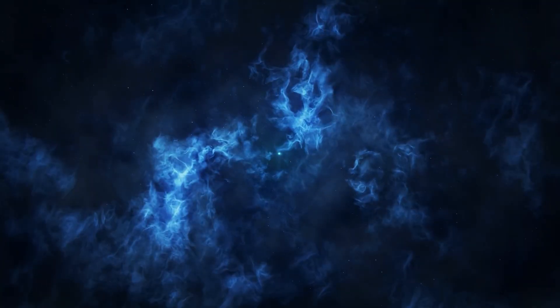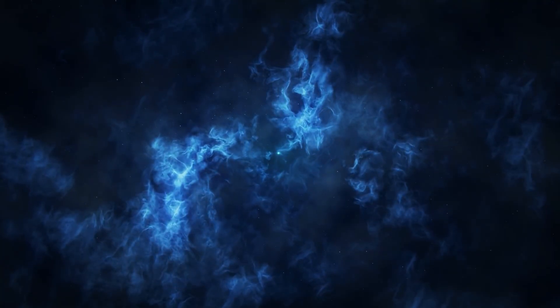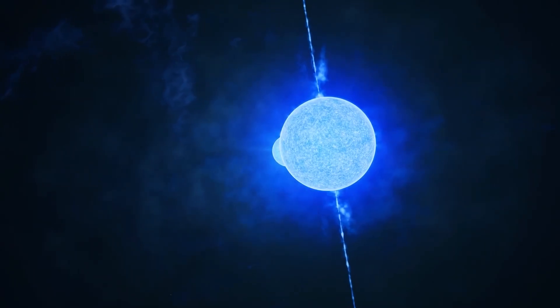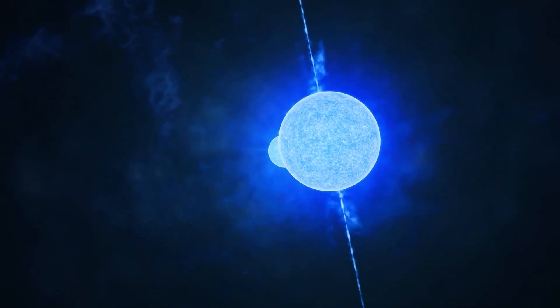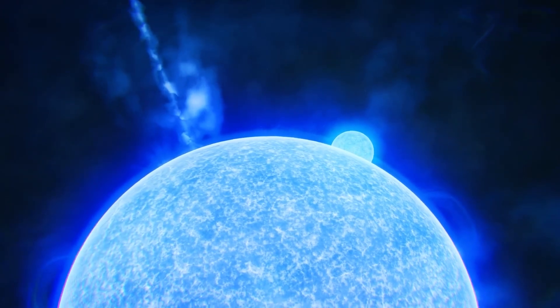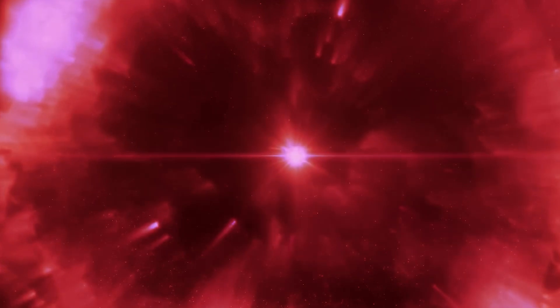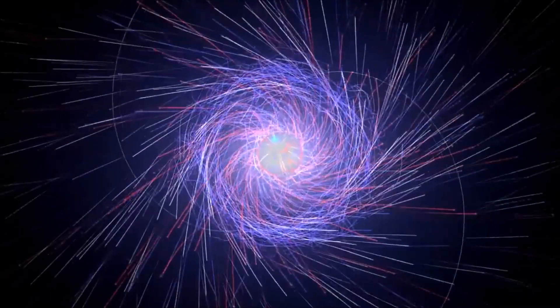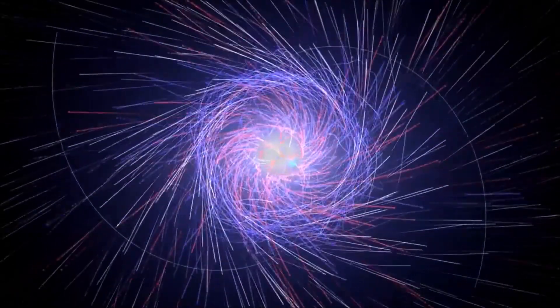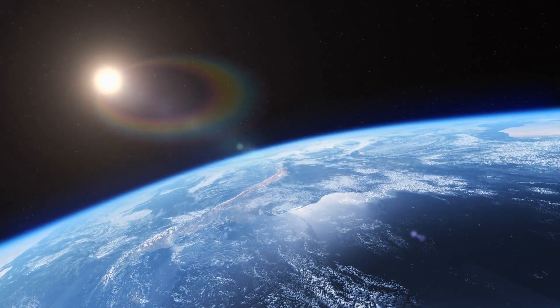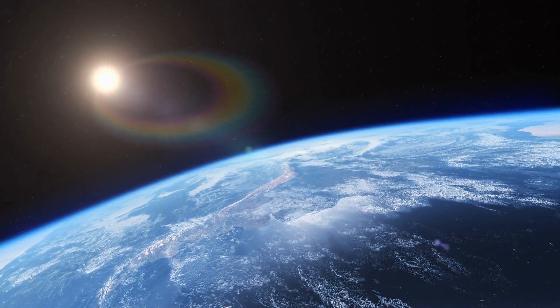If their sheer density wasn't mind-blowing enough, neutron stars come with a list of physical traits that sound more like science fiction than reality. For one, they spin at unbelievable speeds. Some whirl hundreds of times every second, faster than a kitchen blender, yet they're the size of a city and heavier than the sun. Imagine an object with that much mass spinning so quickly—it's like nature's ultimate centrifuge. Then there's their magnetic field.